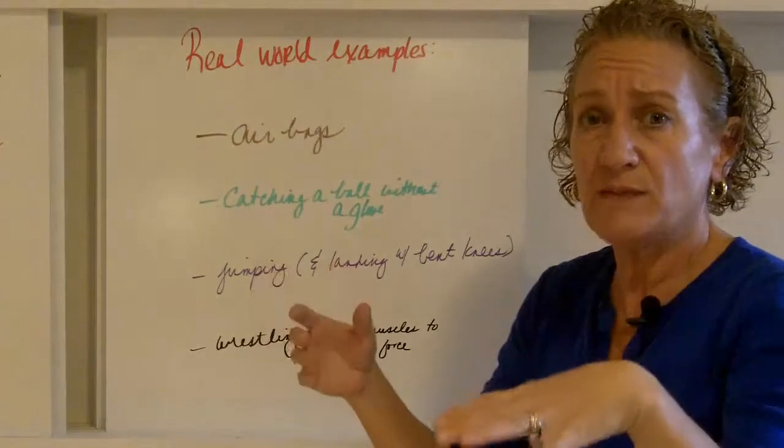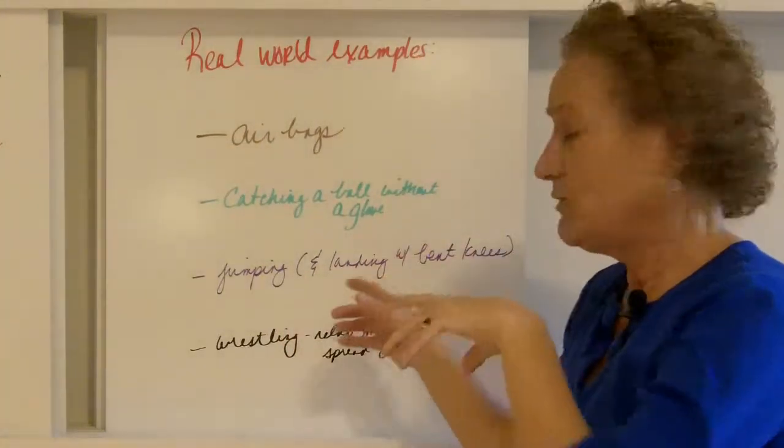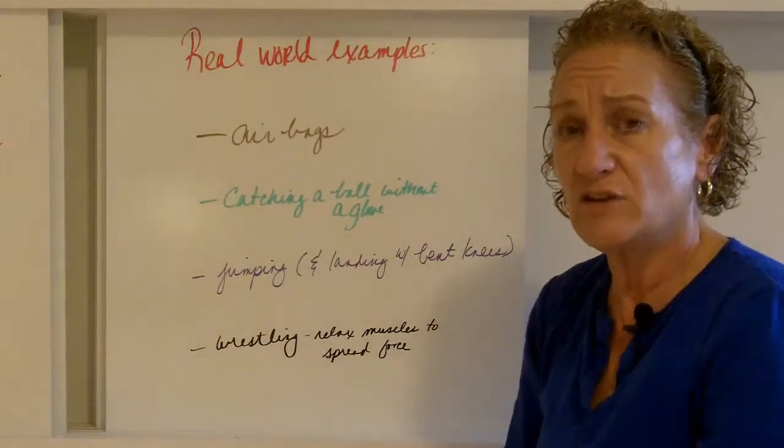Jumping. If you jump off of something and you're going to land on solid ground, you want to land with your knees bent. If you land with your knees bent, there's less chance of getting injured.